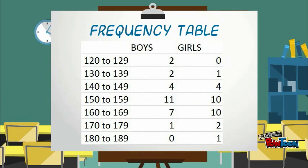To summarize our data, a frequency table has been used. In the first column we have the measurements from 120 to 189. In the second column we have a tally for the boys' arm spans, and in the last column we have a tally for the girls' arm spans.